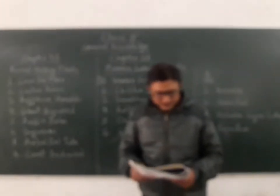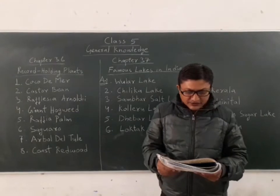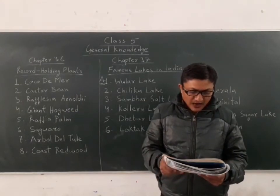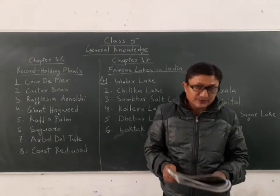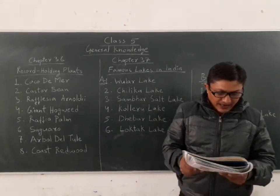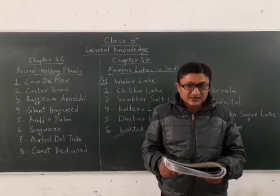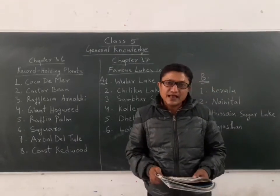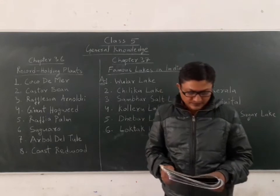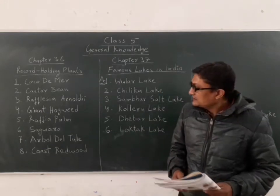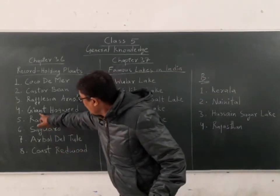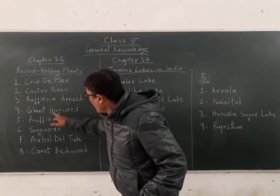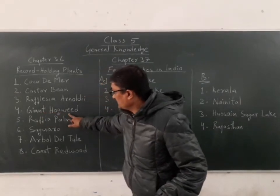Fourth: it is the tallest plant, which can grow up to a height of 3.6 meters and has leaves that measure 91 cm in length. The answer is Giant Hogweed.